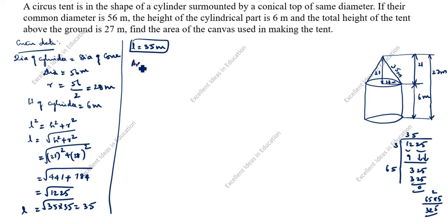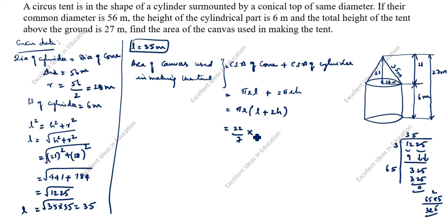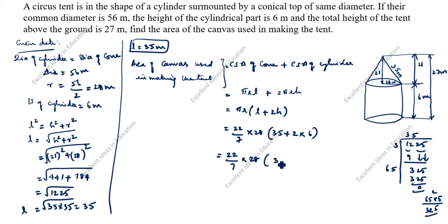The area of canvas = curved surface area of cone + curved surface area of cylinder = πrl + 2πrh. Since πr is common, we factor it out: πr(l + 2h). Substituting π = 22/7, r = 28, l = 35, and h = 6: = (22/7) × 28 × (35 + 12) = (22/7) × 28 × 47.